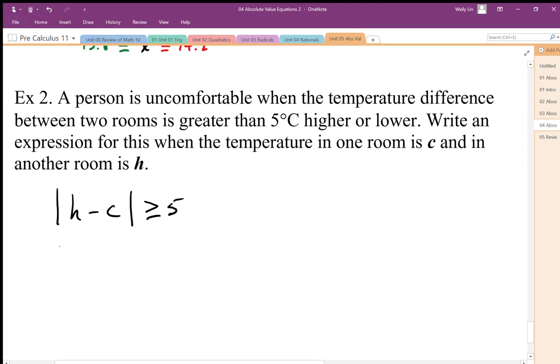So we can then write the positive version of this, so H minus C is greater than or equal to 5. Or the negative version of this is when H minus C is less than negative 5. So if the difference is greater than this, you'll be going from one room to the other and feeling a big difference in temperatures, which makes you uncomfortable, whether from lower to higher or higher to lower.